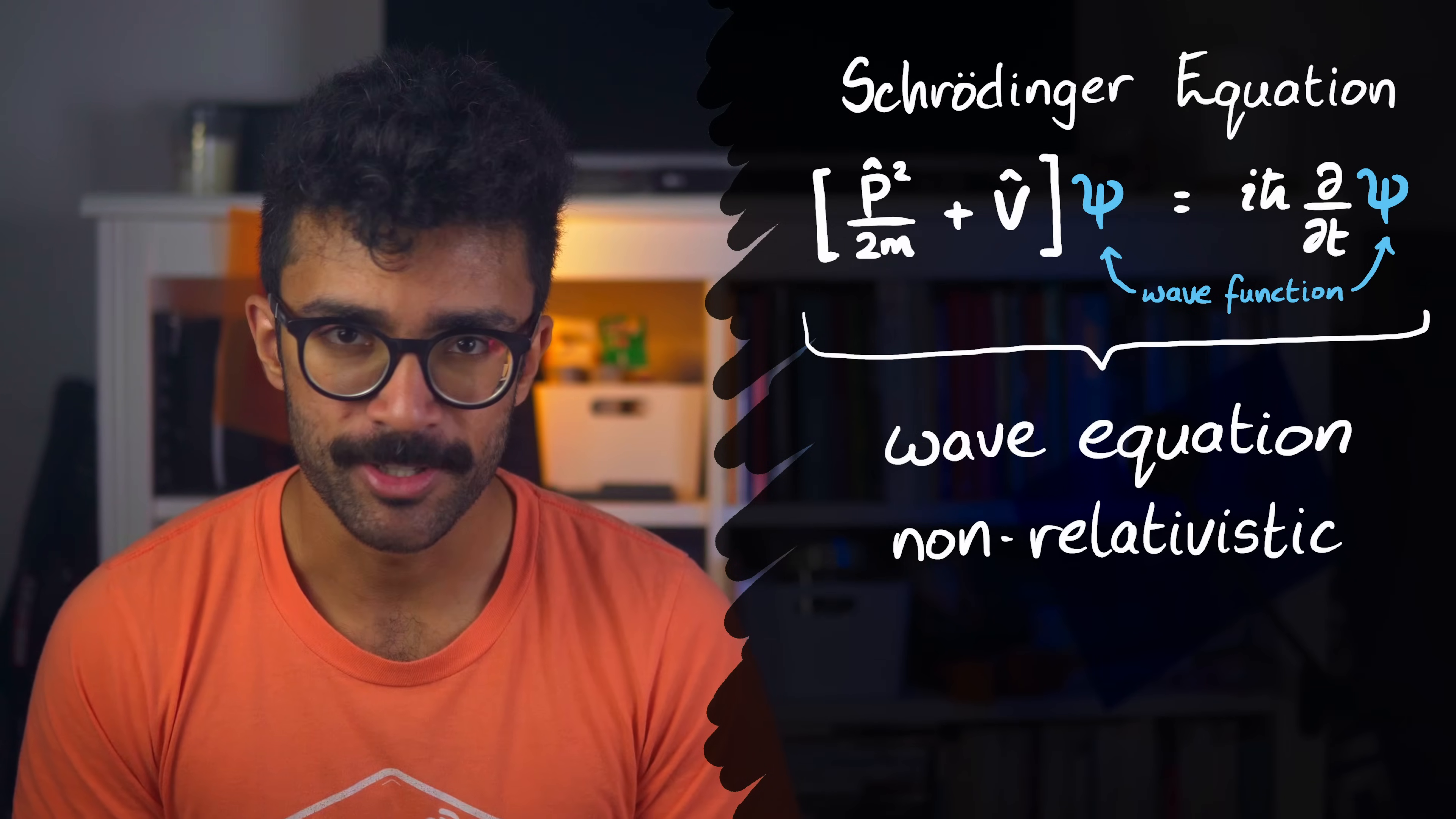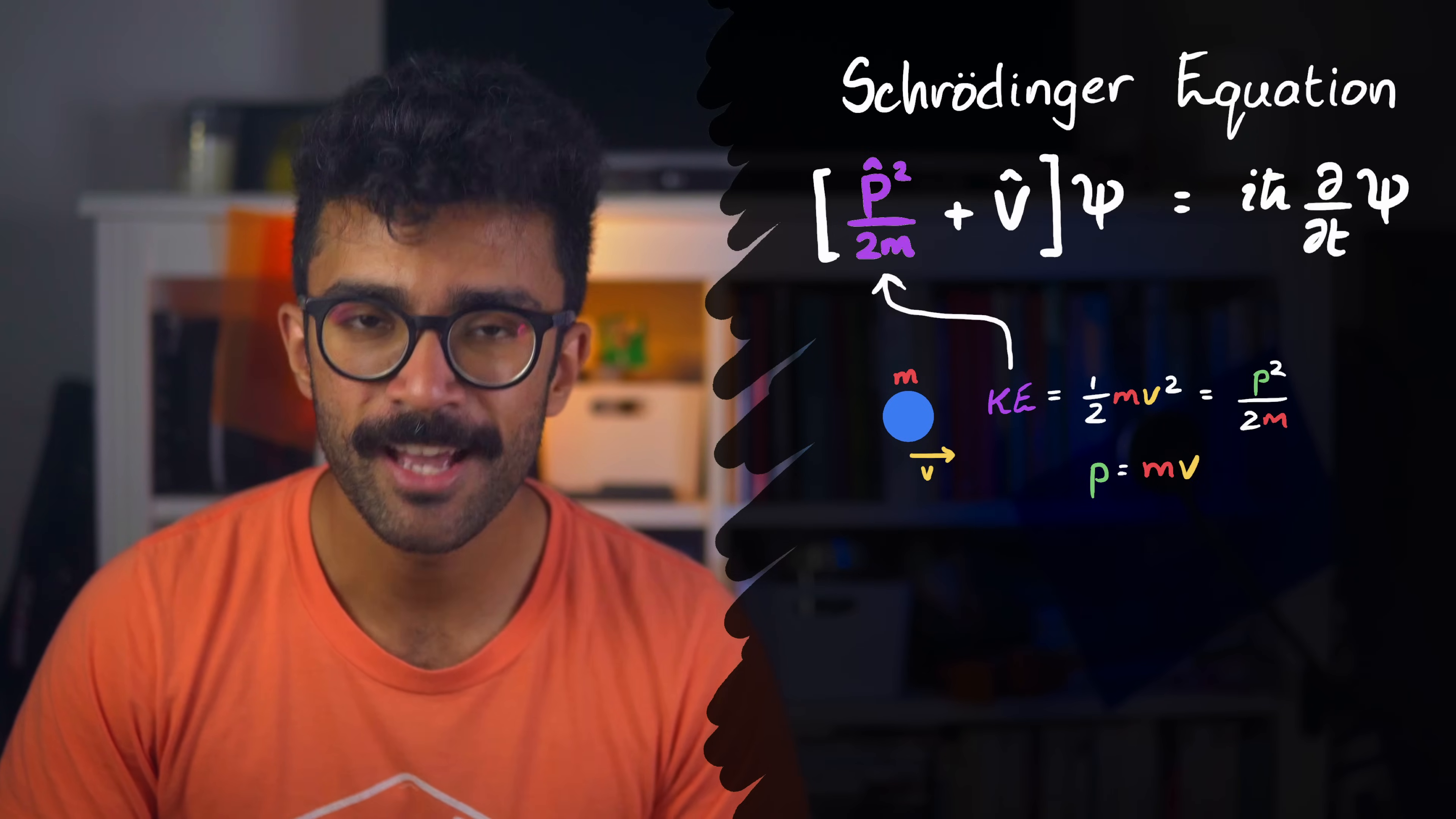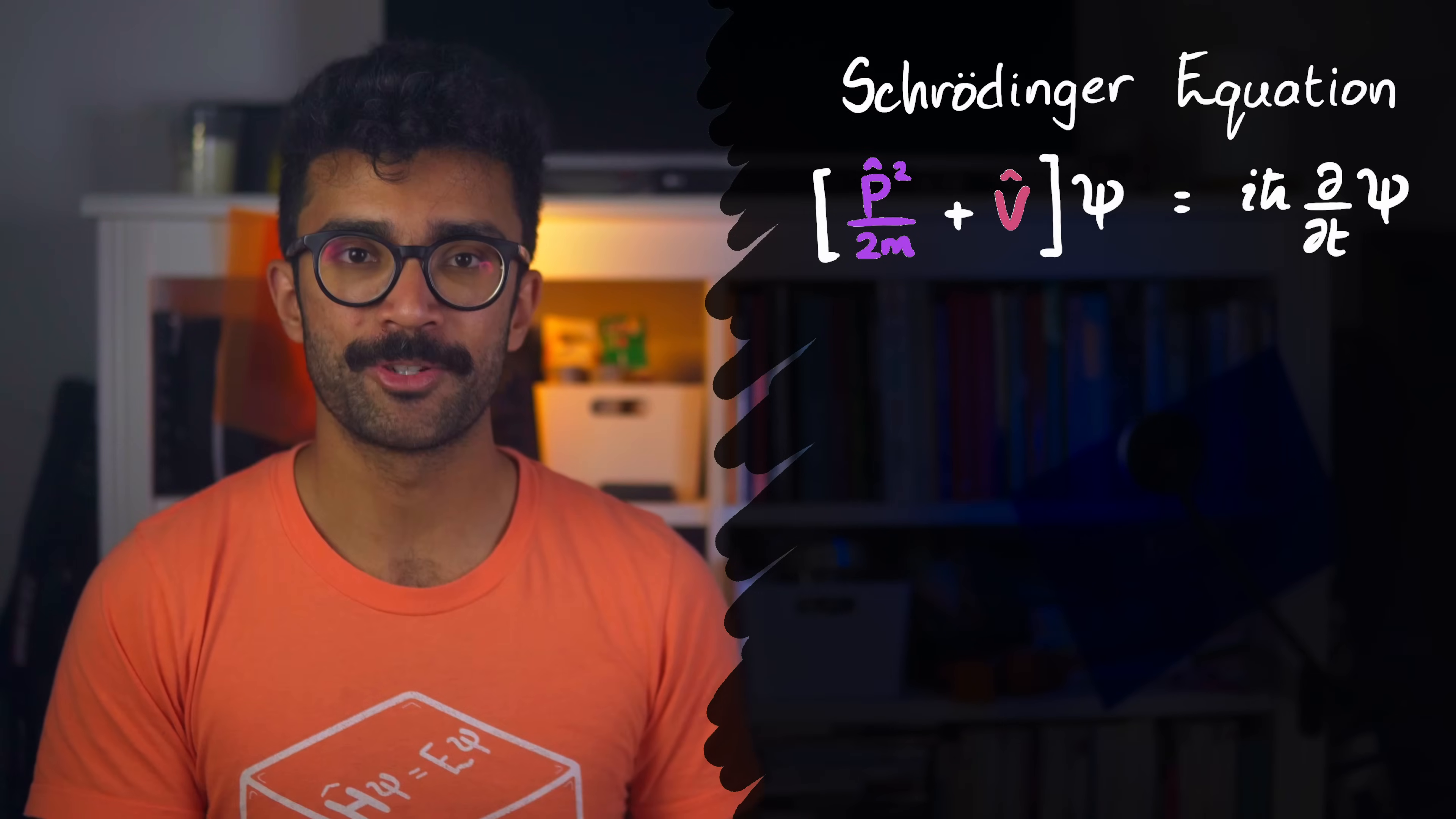Now, one way to think about the Schrödinger equation, in a sort of hand-wavy, loose way, is to start with the fact that for any object that has mass, its kinetic energy is given by half mv squared, where m is its mass and v is the speed with which it's moving. We can write this term with momentum, p, in it, in which case it would look like this. Feel free to pause the video and confirm that this actually works. Then we can add to the object's kinetic energy any potential energy that it experiences. Now, there's no one single equation for potential energy, because obviously it depends on what kind of potential energy our object is experiencing. So we just add a general potential energy term, v.